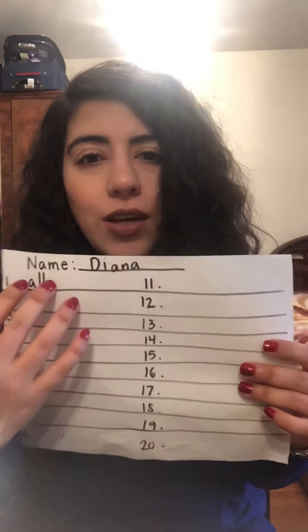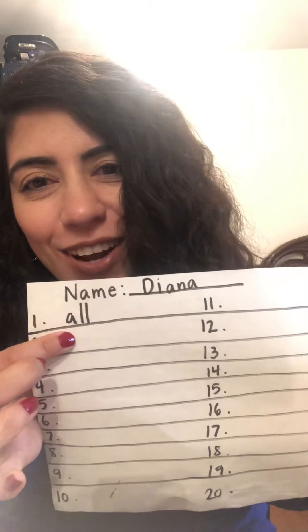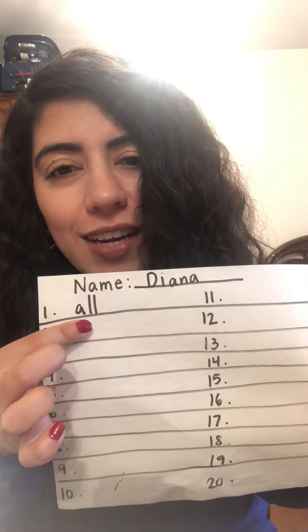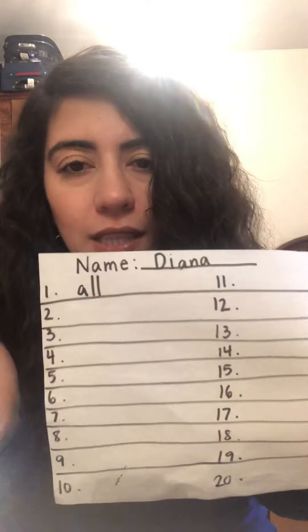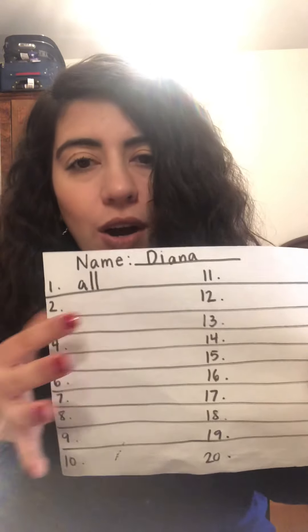Just a reminder: when we write our sight words, we are using lowercase letters — that's rule number one. And secondly, make sure you guys are staying on the lines when you write your sight words. I already wrote the first sight word to show you how I want you guys to write it. The sight word is "all" — A-L-L — all lowercase letters, straight on the line. That's how I want you guys to write it: stay neat and stay on the line.